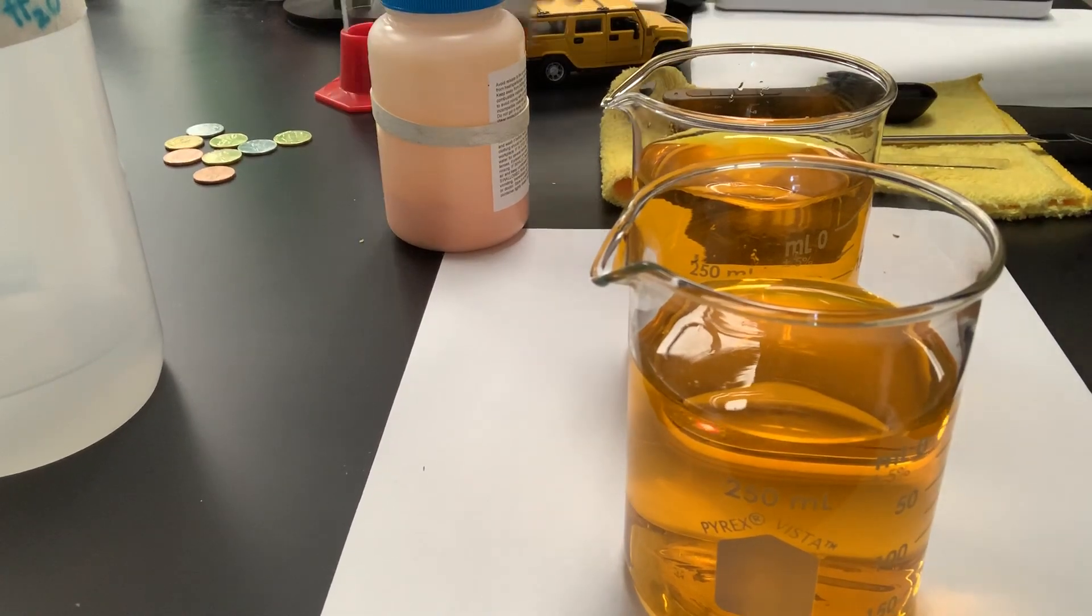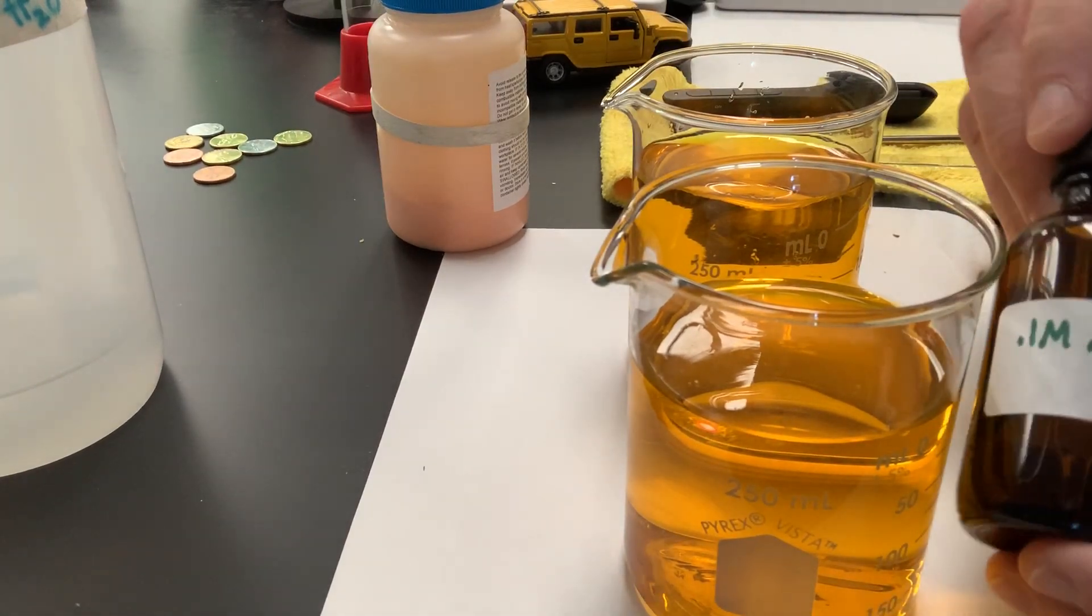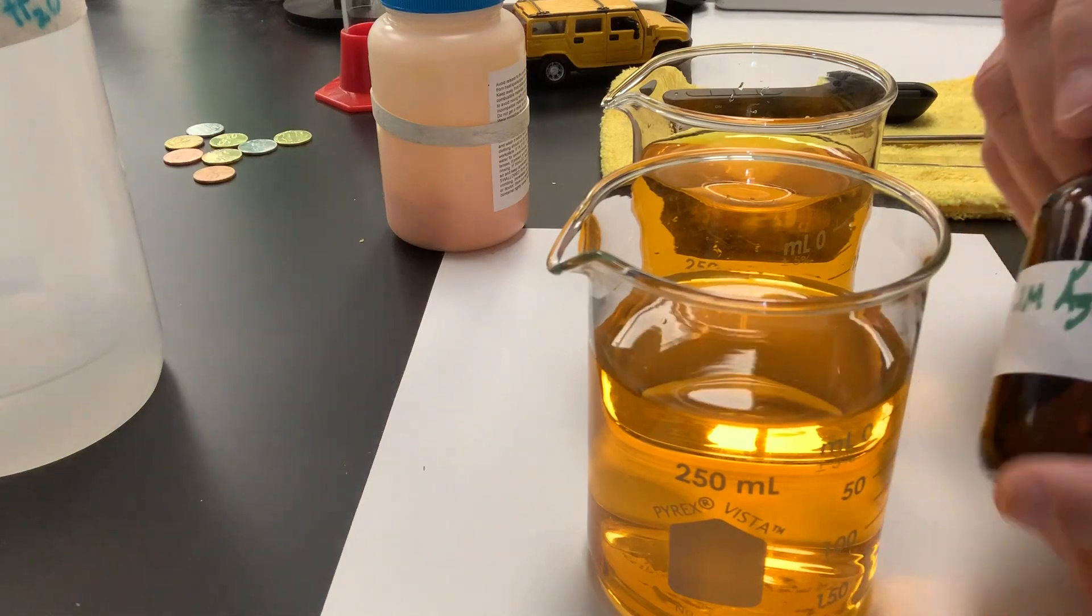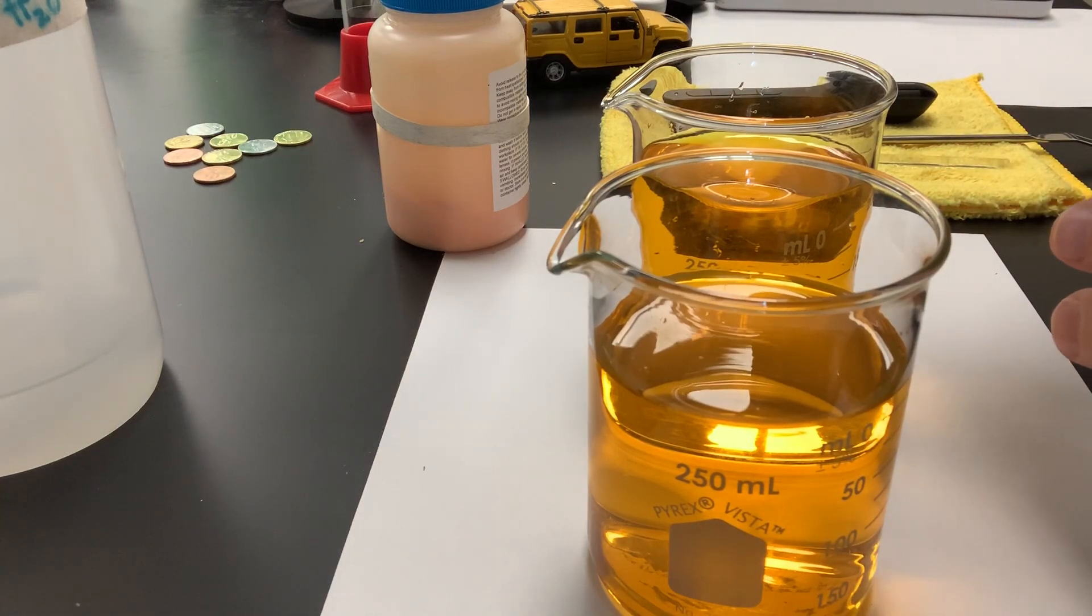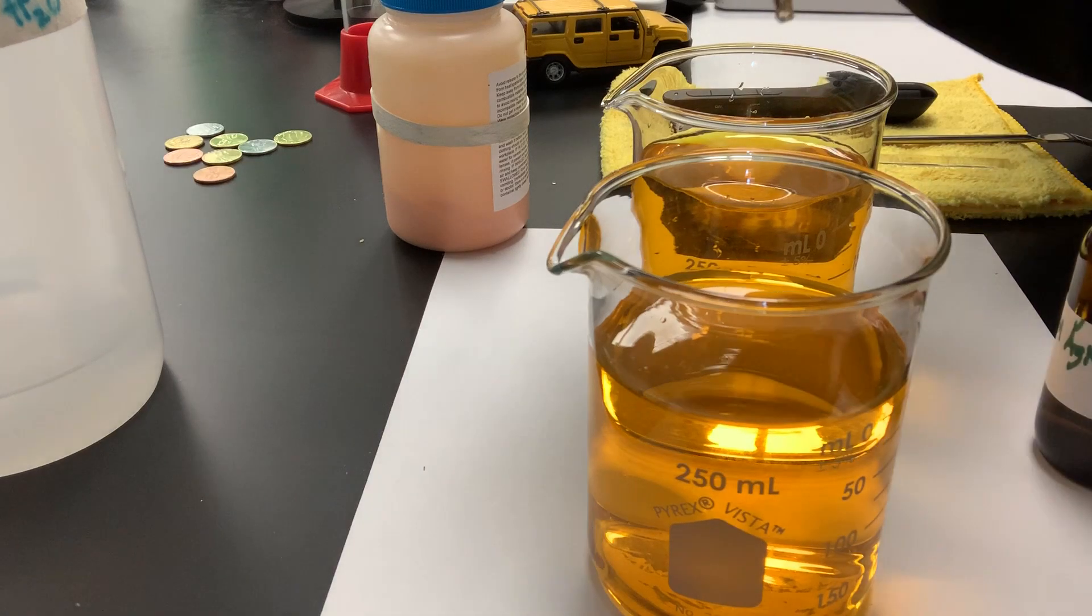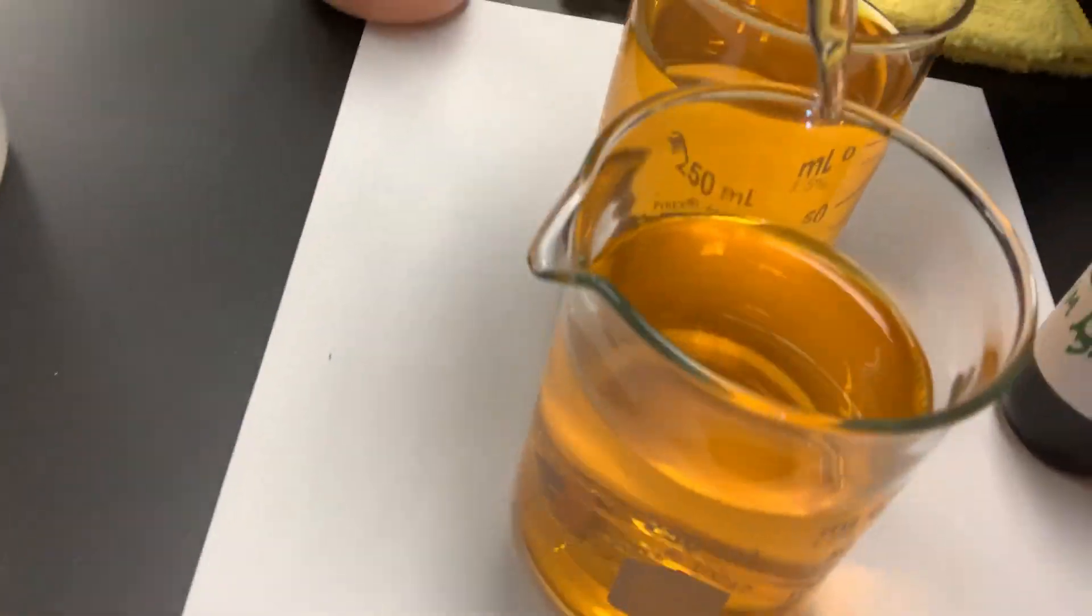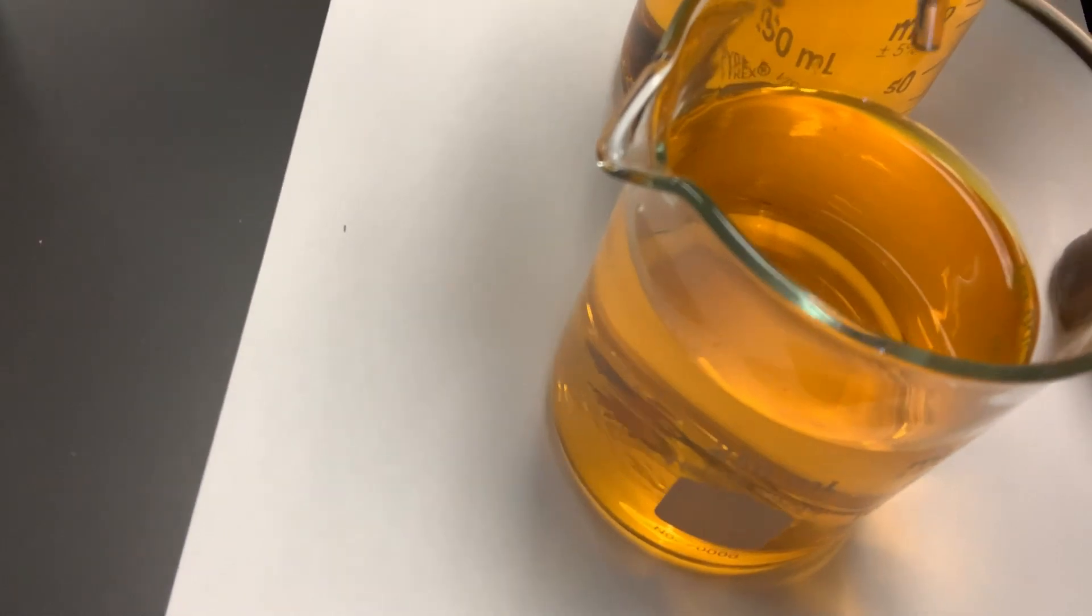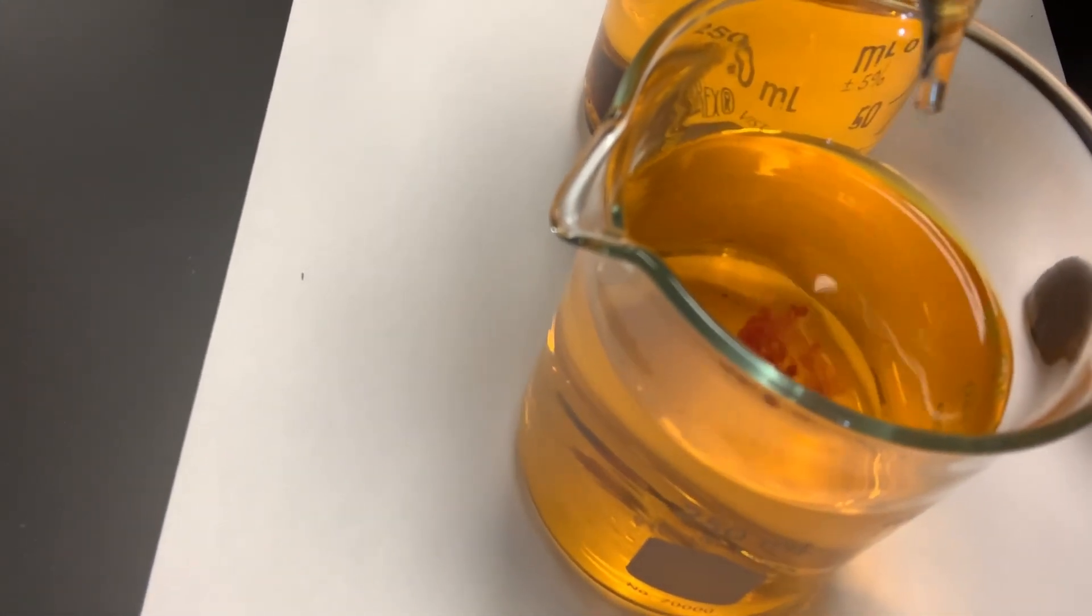To one of the beakers now, I'm going to add another homogenous mixture. This is silver nitrate dissolved in water. And I'm just going to add a few drops to one of the beakers. And we're going to form what's called a precipitate. It's a solid forming in solution. Sort of fun to watch. So I'll put the camera over top, and you'll be able to see that precipitate forming.